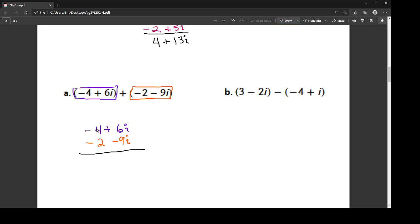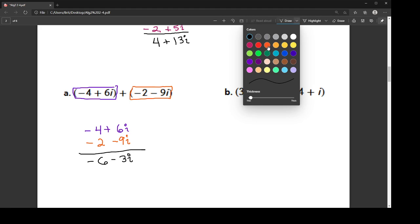And then I add them down. So negative 4 minus 2 is negative 6, and 6i minus 9i is negative 3i.